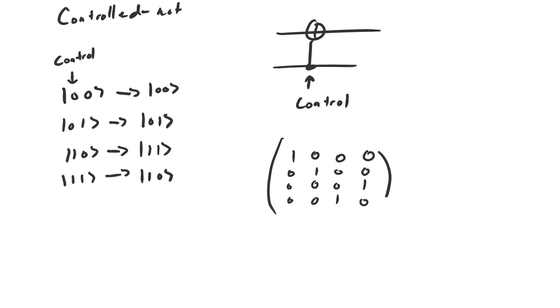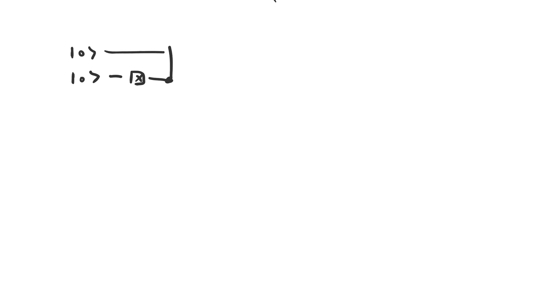Let's look at some circuits that use the controlled-NOT gate, which will involve two qubits. If we have two qubits both starting in |0⟩, we NOT the second qubit, and then apply a controlled-NOT where the second qubit is the control qubit. Because the control qubit is |1⟩, the first qubit is flipped. The result is that both qubits will be in state |1⟩, so we're guaranteed to find the system in state |1,1⟩.